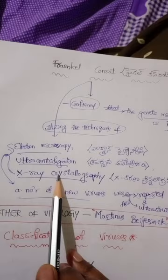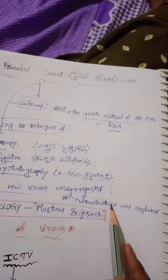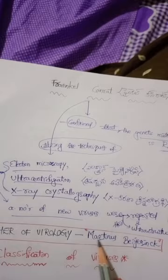He also utilized techniques of electron microscopy, ultracentrifugation, and X-ray crystallography. By utilizing these techniques, he reported various numbers of new viruses. Their ultrastructure was also explained by him through these techniques.